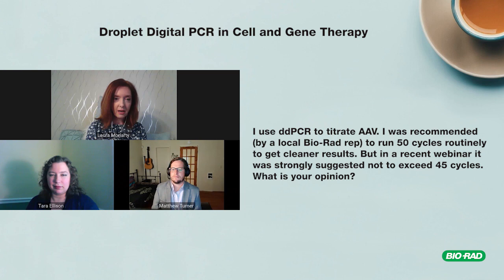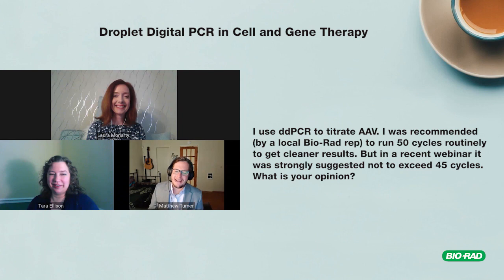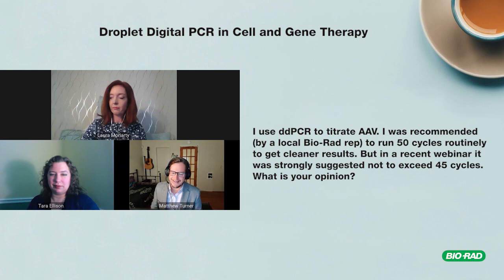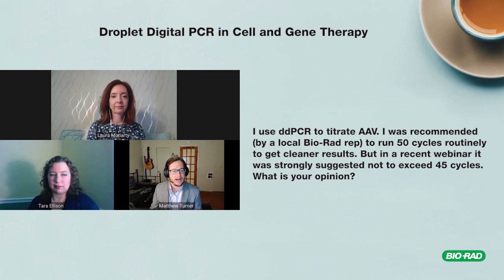A user titrates AAV with ddPCR and was recommended to run 50 cycles, but a recent webinar strongly suggested not exceeding 45 cycles. Running 50 cycles is not recommended because at that point you might start amplifying things that are not your target of interest. Our typical recommendation is to run up to 40 cycles across the board. If you're not getting the target, try running concentration gradients or redesign the assay.